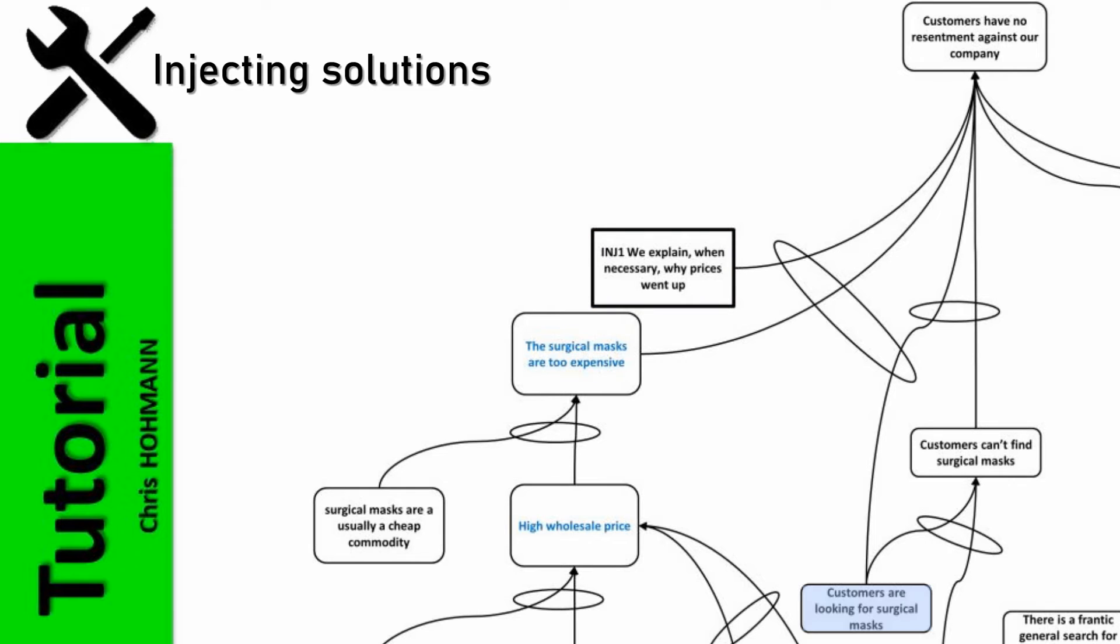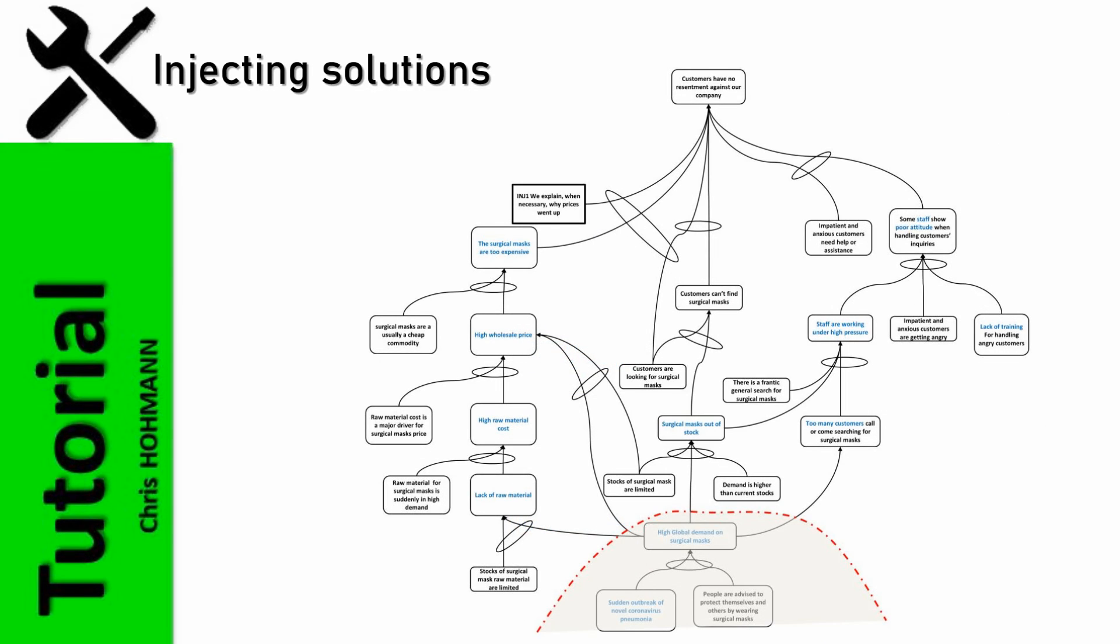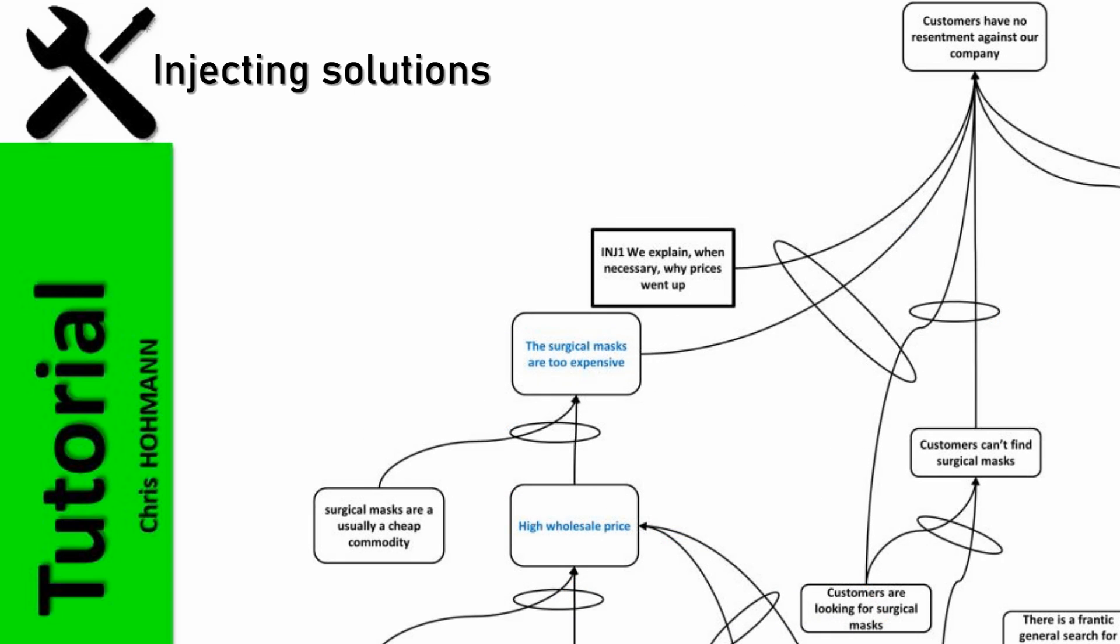This reads, if customers are looking for surgical masks, and if surgical masks are too expensive, then customers have no resentment against our company. Customers may not be aware of the global surge in demand, therefore we must explain that our company is not making extra profit from the situation, but high demand and limited stocks lead prices to go up. Note that an injection is a condition that does not yet exist, but will combine with an existing fact to change the outcome.